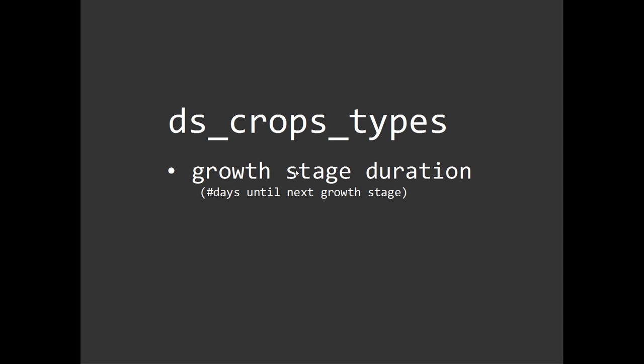Now let's talk about our grid. When we make our data structure we're going to call it ds — for data structure — and then crops_types. We're going to have a couple of grids and we're just going to use this naming convention. In this grid we're going to be storing two kinds of information for now. The first one, going in column zero, is going to be the crop's growth stage duration, which means the number of days until it goes to the next growth stage.